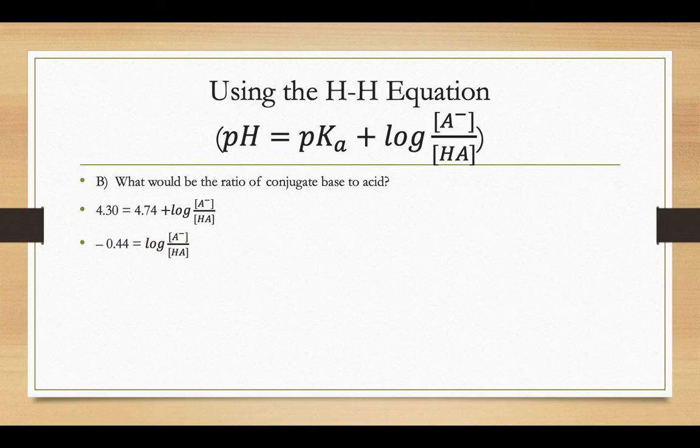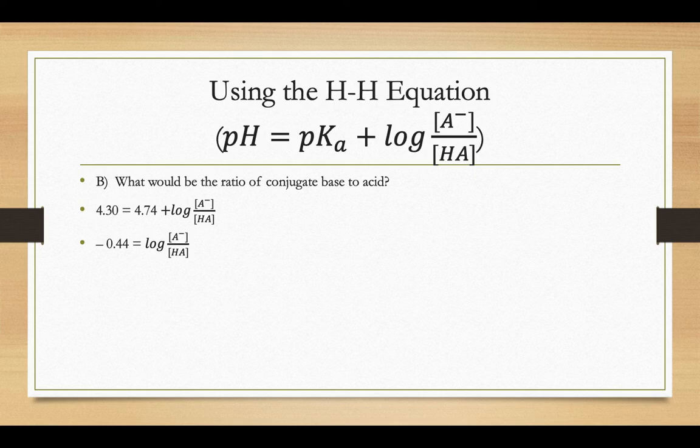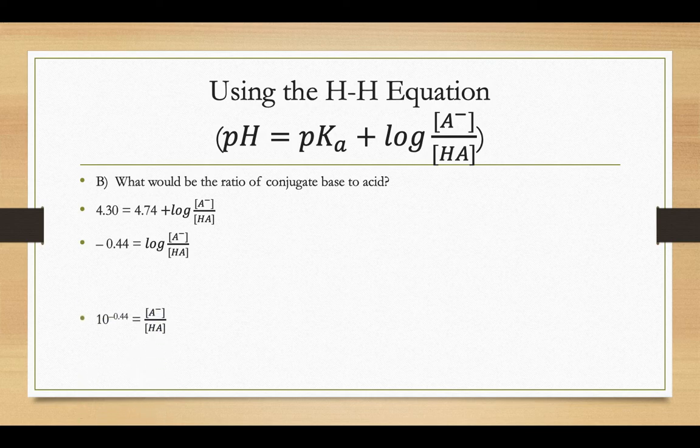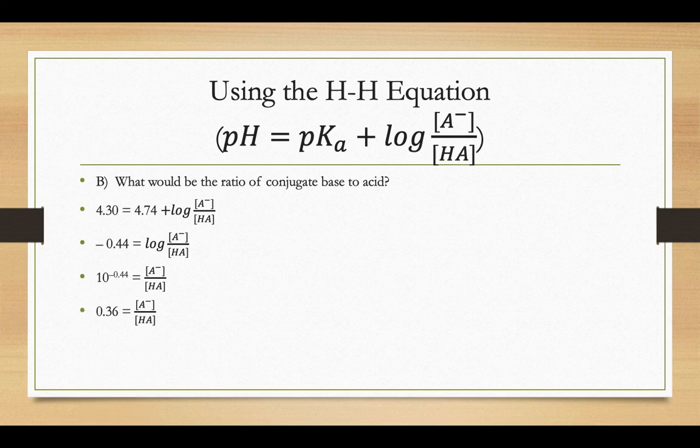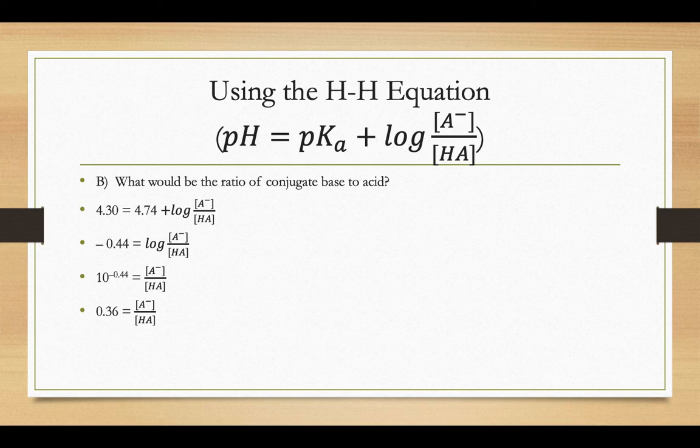Let's start substituting in what we know. If we subtract 4.74 from both sides, you'll get negative 0.44 on the left and just the log there on the right-hand side. If we rearrange that log equation, 10 to the negative 0.44 power would be equal to A minus over HA. 10 to the negative 0.44 is the same thing as roughly 0.36. So that means the A minus concentration needs to be 0.36 that of the HA concentration.